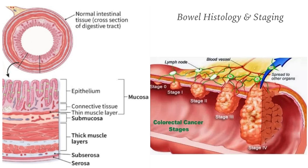The cross-section of the GI tract reveals a colonic wall composed of the mucosa layer, submucosa, muscular layer, subserosa, and serosa layer. The staging of the cancer is related to the tumor extension or involvement of these layers.